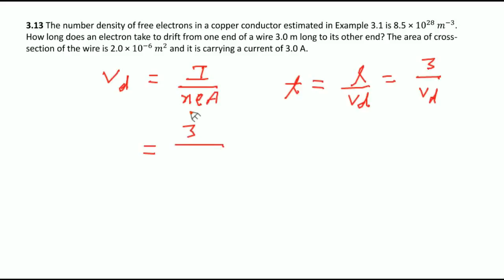Current is given 3 ampere and n is given 8.5×10^28. As you know, 1.6×10^-19 coulomb, and area is given 2×10^-6 meter square. This is Vd, so you can put here directly.